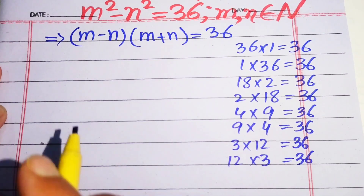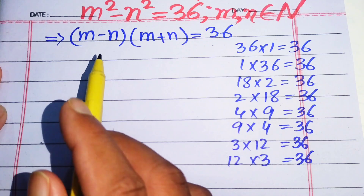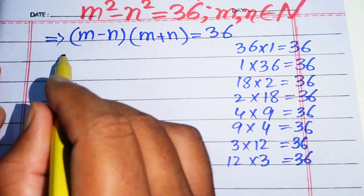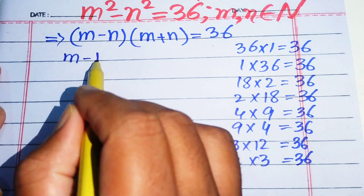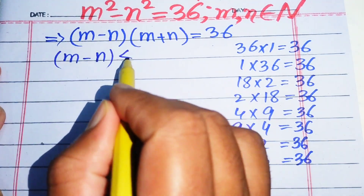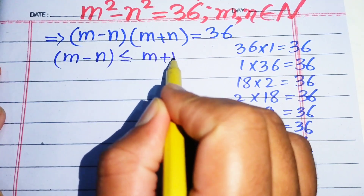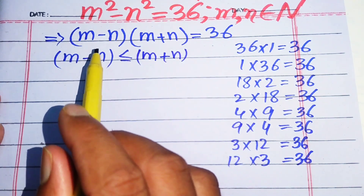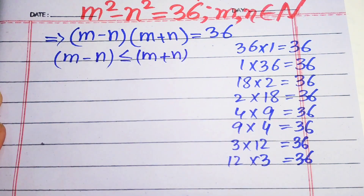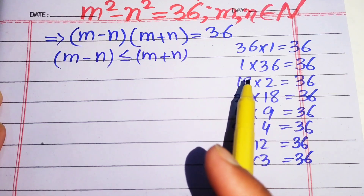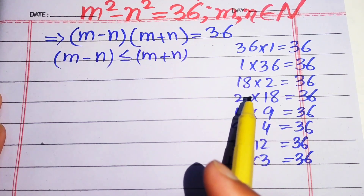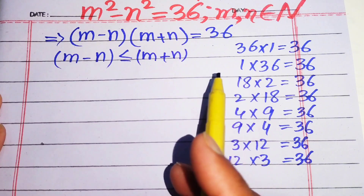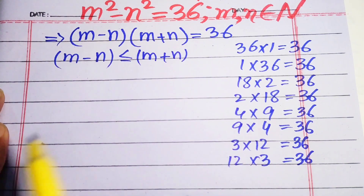Now we focus on the left-hand side. Looking at the two factors, we can establish a relation: m minus n is always less than or equal to m plus n. This means the first factor is always less than or equal to the second factor, so we choose only those pairs where the first number is less than or equal to the second number.